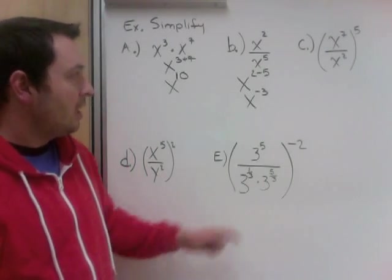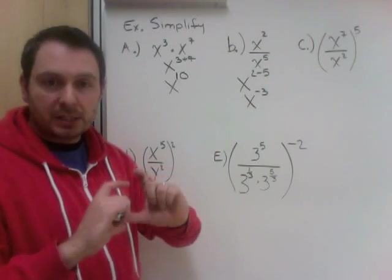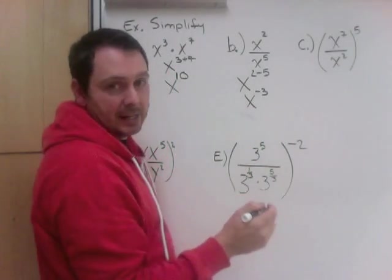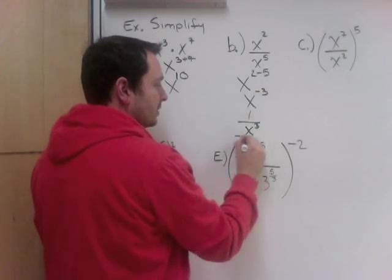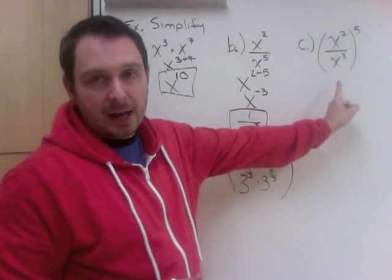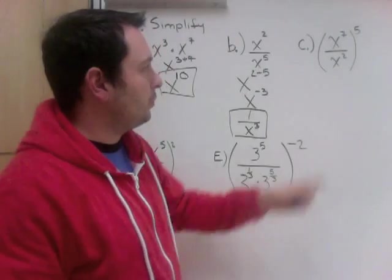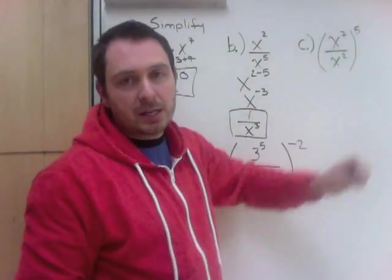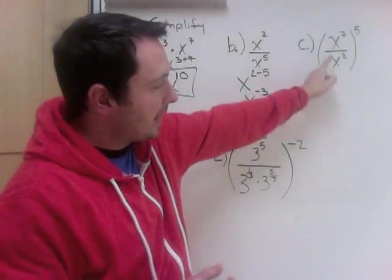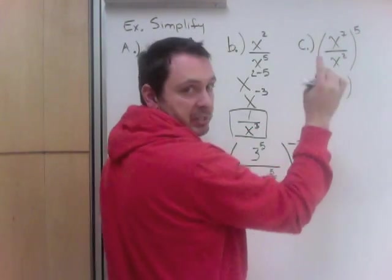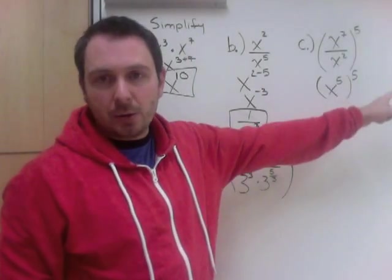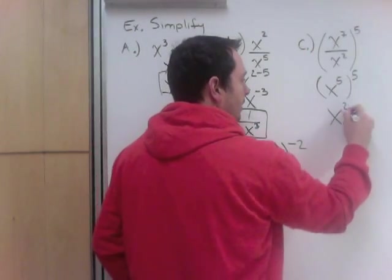We do not like negative exponents — they must be simplified. A negative exponent means the reciprocal, which flips the fraction. So x to the negative 3, which is over 1, becomes 1 over x cubed. Next: x to the power of 7 divided by x squared, all to the power of 5. This mixes two laws. With BEDMAS, we work inside brackets first: x to the 7th divided by x squared — dividing, so subtract: 7 minus 2 is 5. Now I have x to the 5th to the power of 5. Powers of powers — multiply: 5 times 5 is 25, giving x to the 25.